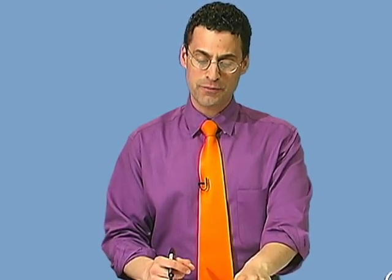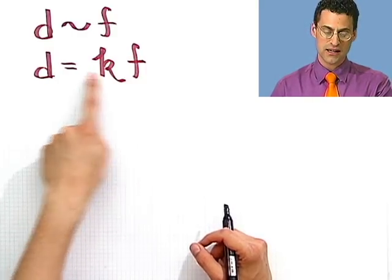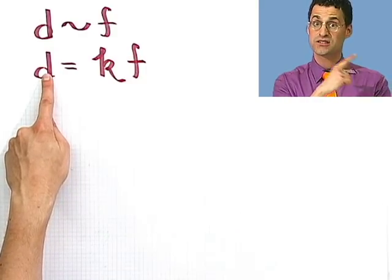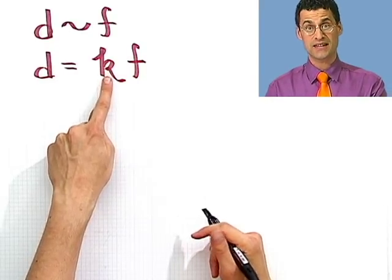So let's see what it would be in this case. Well, we actually have a data point, so we can actually find the constant. Because we know if we put a 15 force on the spring, it's going to stretch 8 inches. So that's given to us. So that will allow us to identify the constant.